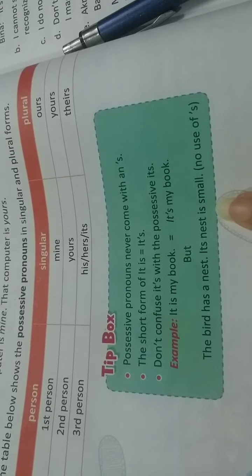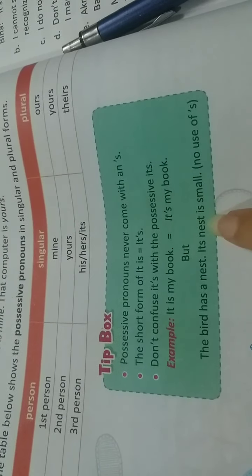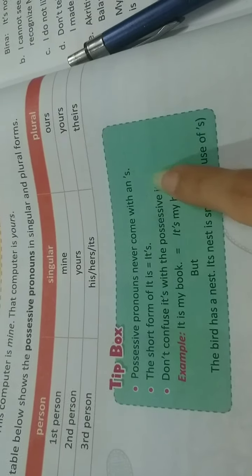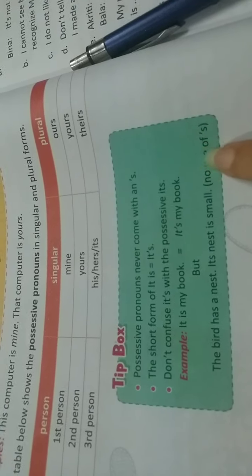For possessive case, we'll use possessive pronoun. And the possessive pronoun is its. So, its nest is small. No use of apostrophe s. To show the possessiveness in possessive pronouns, we cannot use apostrophe s. That's why apostrophe s is not used here.